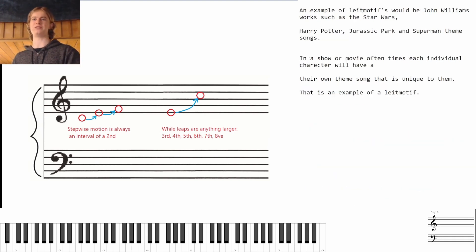An example of leitmotifs would be John Williams works such as the Star Wars, Harry Potter, Jurassic Park, and Superman theme songs. In a show or movie, oftentimes each individual character will have their own theme song that is unique to them. That is an example of a leitmotif.